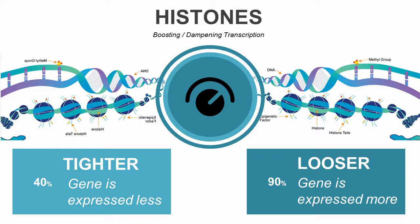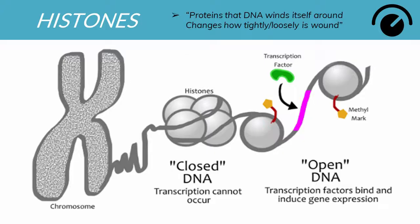What about the knob function? Histones are proteins that DNA winds itself around. The tighter they are wound, the less the gene is expressed, while the looser they are wound, the more the gene is expressed.